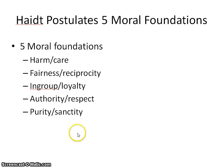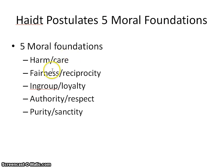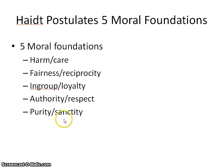In part one we did the background, some of Haidt's early research, and we arrived at his five moral foundations: harm/care, fairness/reciprocity, in-group loyalty, authority/respect, and purity/sanctity. He was using anthropology research to come up with these five, but he was also using research in evolutionary biology.